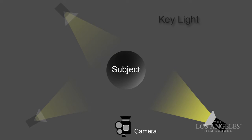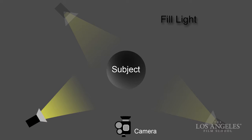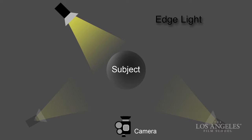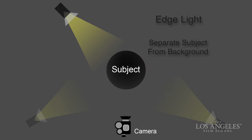In three-point lighting we use three fixtures. A key light — the primary job of the key light is to define the shape, texture, and color of our subject, and it also provides a baseline for exposure for our camera settings. The fill light is the second light, which controls the contrast of the situation — adjusting the density of shadows. And then an edge light, the third light, is designed to separate our subject from the background, giving a little bit of definition of the profile or overall shape of the face without affecting the detail that the key and fill lights handle from the front.